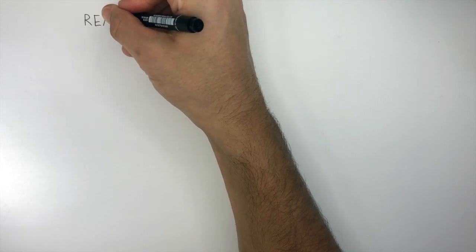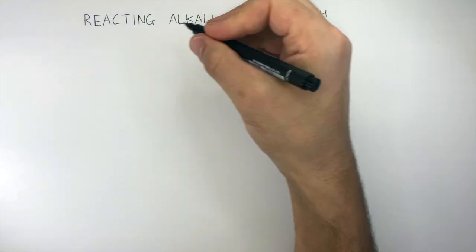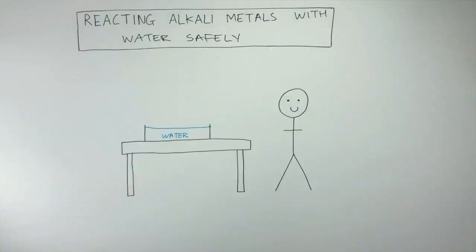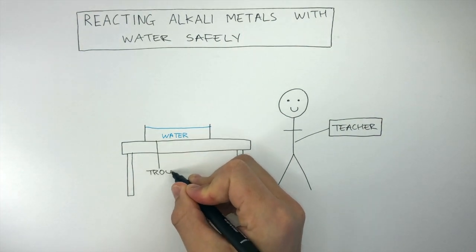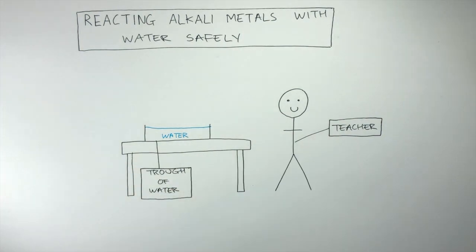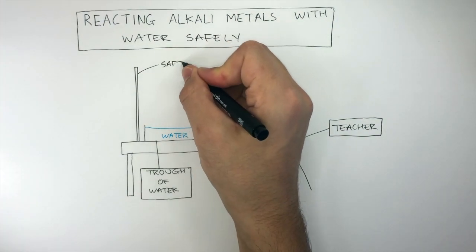Let's first go through the safety precautions when reacting alkali metals with water safely. As these reactions are so vigorous and have the potential to be quite dangerous, the teacher has full responsibility for this reaction. A trough of water is placed on top of a smooth surface such as a table and placed behind a safety screen.